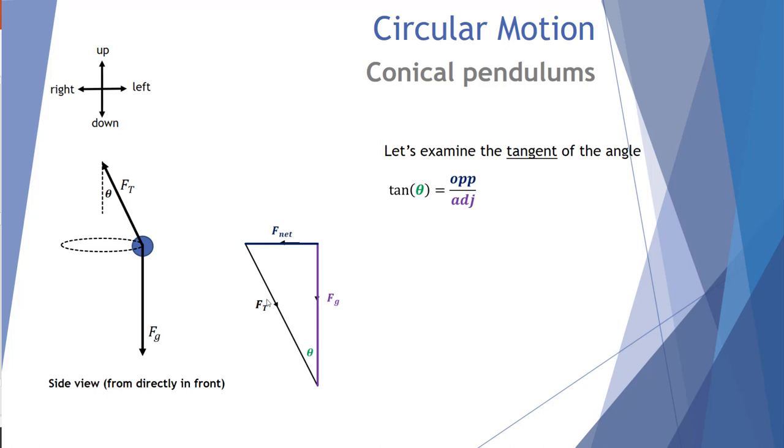The third and final trig function is that of the tangent. Tangent, as we know, is opposite over adjacent. In this case, opposite is the net force over adjacent is the gravitational force. That can be written as F_net = Fg·tan(θ). And of course, we know that the centripetal force is the net force, MV²/R. And we know that the gravitational force is the product of Mg. So we end up with MV²/R, the net force is equal to Mg·tan(θ).